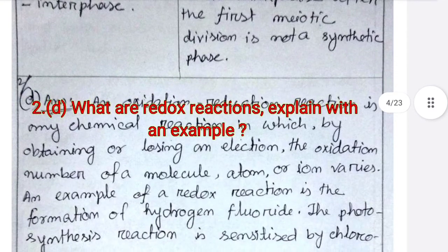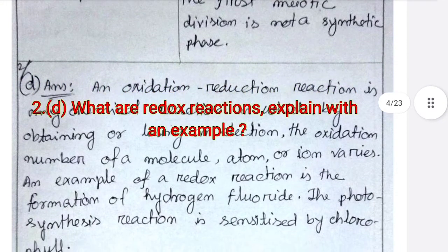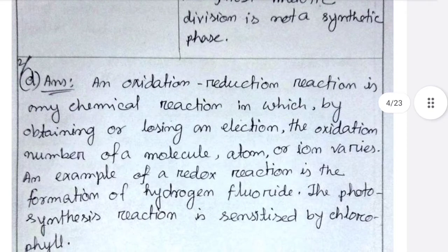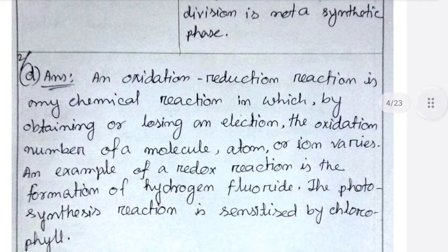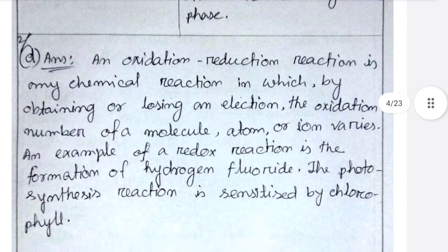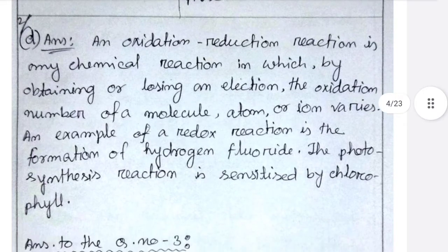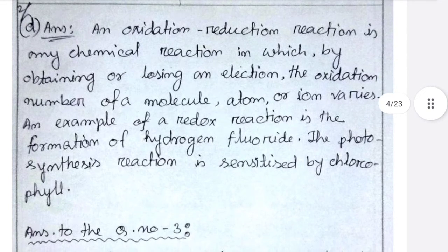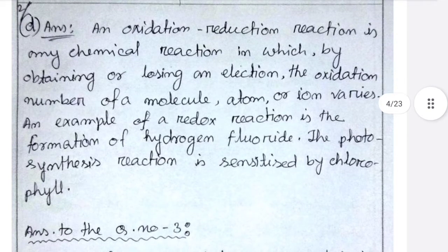Number D: what are redox reactions? Explain with an example. An oxidation-reduction reaction is any chemical reaction in which, by obtaining or losing an electron, the oxidation number of a molecule, atom, or ion varies. An example of a redox reaction is the formation of hydrogen fluoride. The photosynthesis reaction is sensitized by chlorophyll.